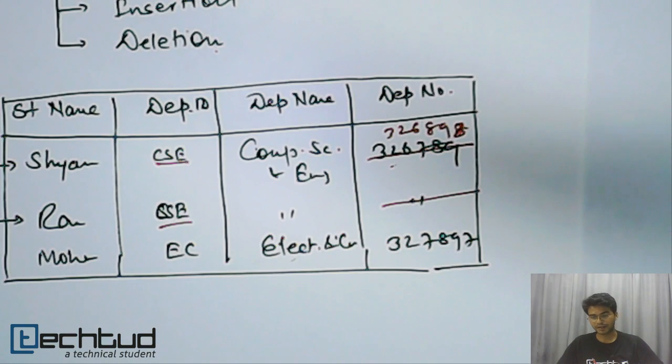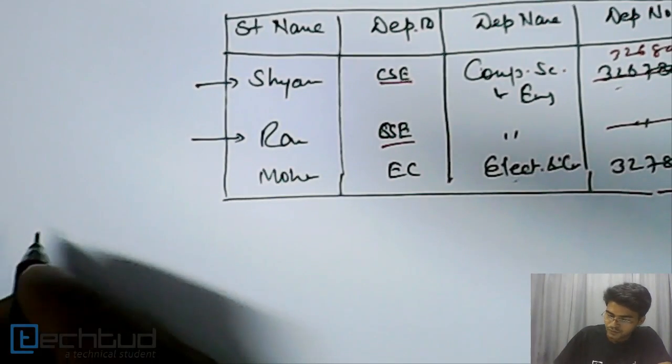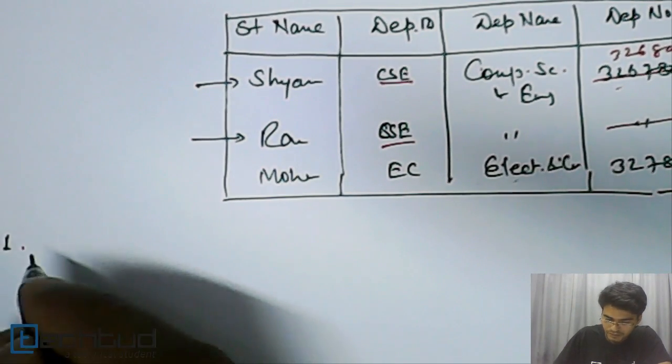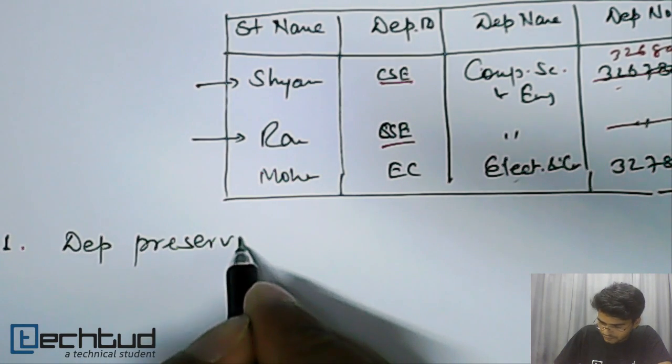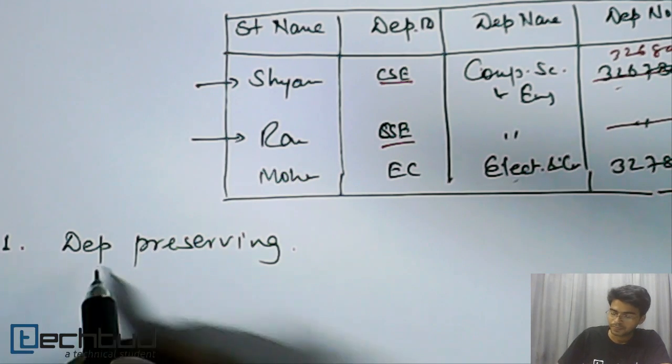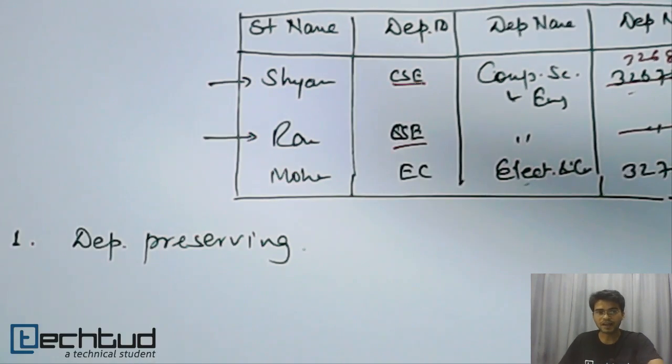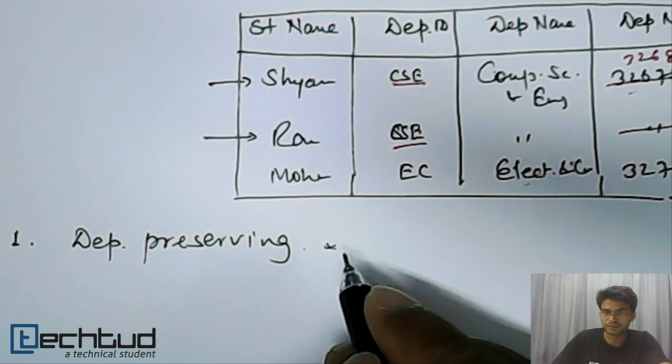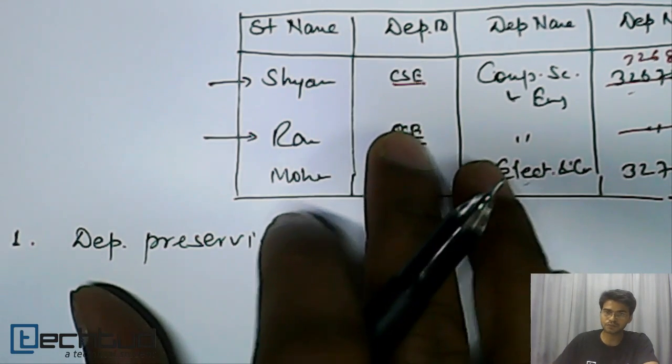Now two different and important things are there. The first one is dependency preserving. When we go for minimizing the database size or complexity or redundancy, we break it into multiple tables. One table is broken into multiple tables. In that case this table has to be dependency preserving.